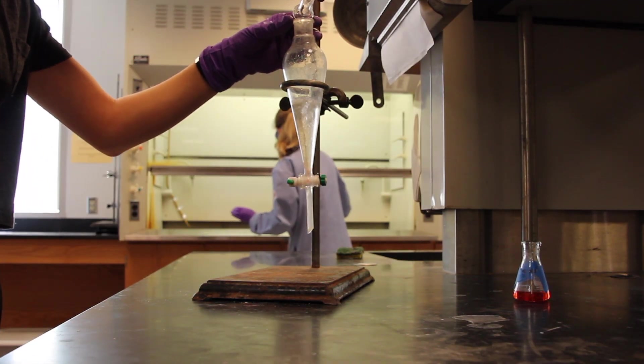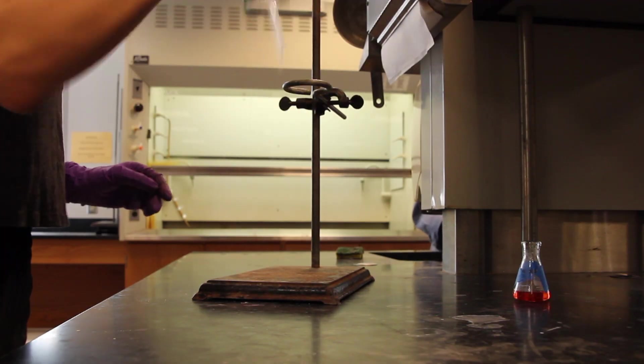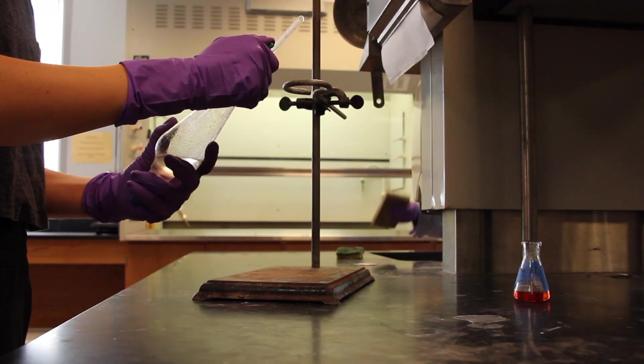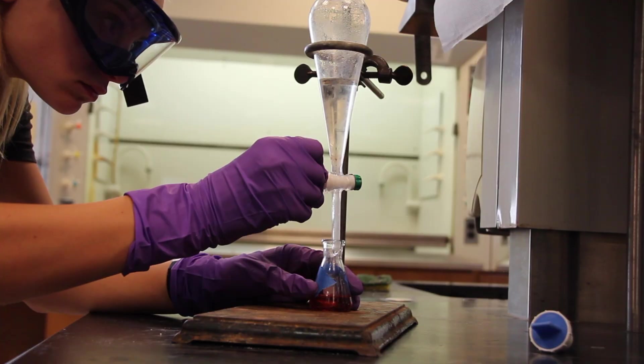Repeat the extraction with 5 milliliters of additional 1.5 molar aqueous HCl. Mix well as before, separate, and combine this aqueous layer with the original aqueous HCl layer.